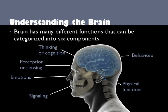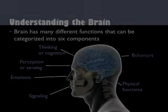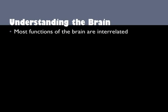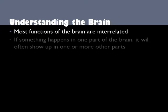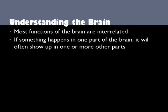The sixth and last function of the brain is behavior. Everything that we do — all of our behavior — is controlled by the brain. Our behavior is dependent on all the other things the brain does. It is important to understand that most functions of the brain are interrelated. Because of the way the brain is constructed, if something happens in one part of the brain, it often will show up in one or more other parts.